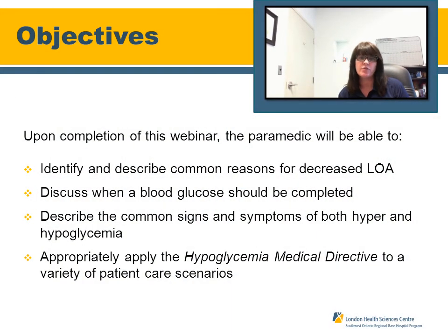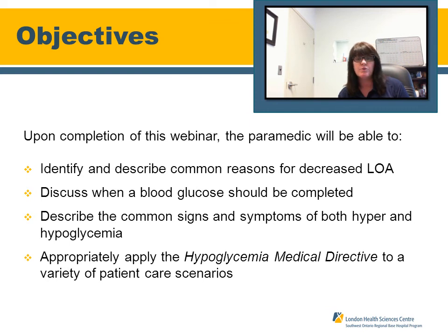The learning objectives for this review are to identify and describe common reasons for decreased LOA, discuss when a blood glucose should be completed, describe the common signs and symptoms of hyper and hypoglycemia, and appropriately apply the hypoglycemic medical directive to a variety of patient care scenarios.